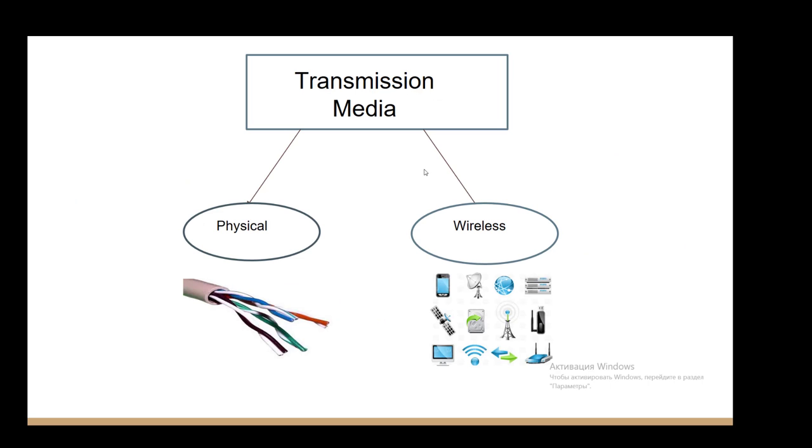Now we can talk about transmission media. Actually, transmission media is divided into two big parts. First of all, it's physical. As you can see from the picture, it's cables. And the second, it's wireless. In the picture you can see nowadays, for example, we use WiFi every day. It can be an example of wireless transmission media.